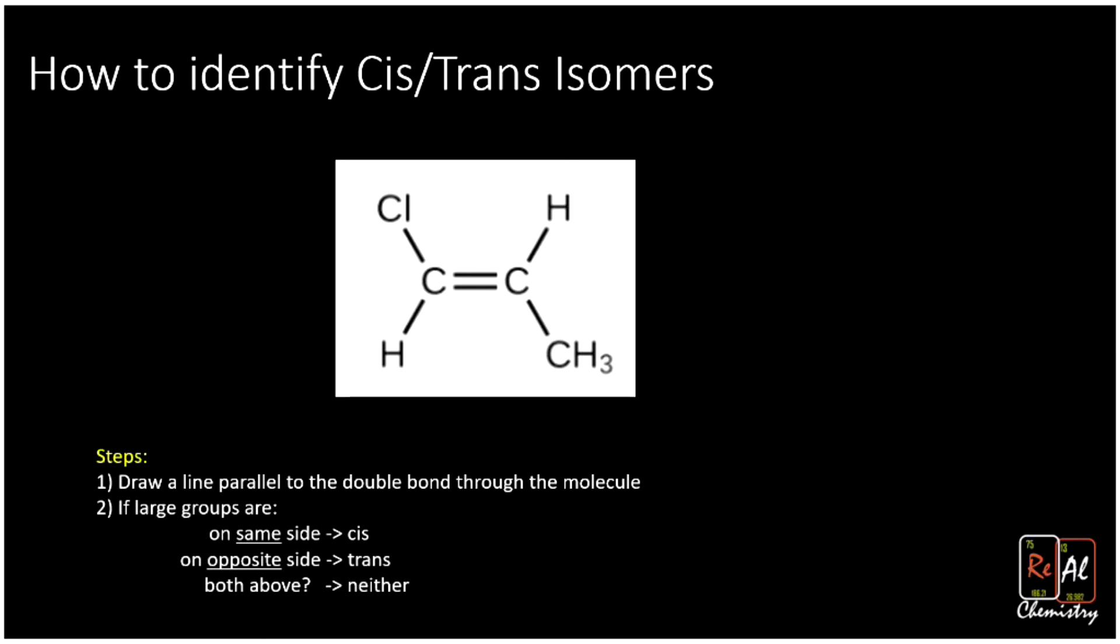Let's apply this rule here with this molecule. So we're going to use a line going parallel to the double bond. So notice that goes straight through the double bond along with it. It's just like we start by drawing the double bond and then we extend it in both directions. That's what we mean here by this line that's parallel to the double bond. And now we look at the big groups. Chlorine, it's up top. CH3, it's on the bottom. So they're on opposite sides of this line. And that means that they're trans.